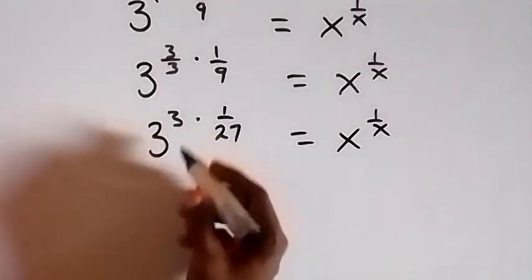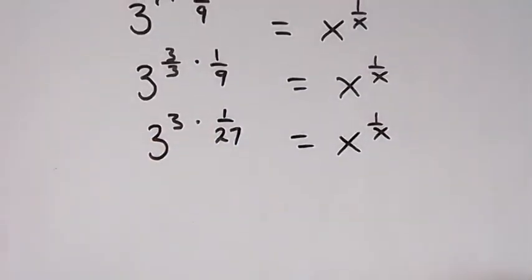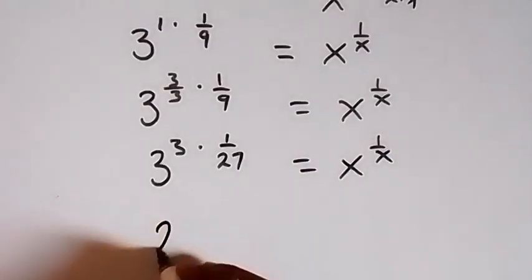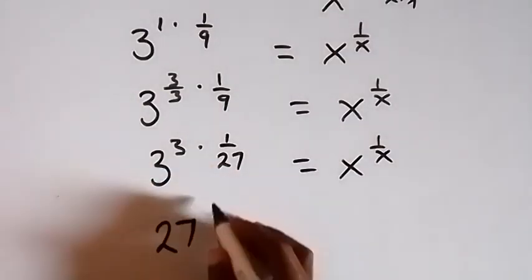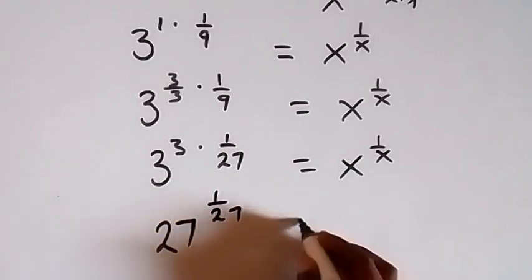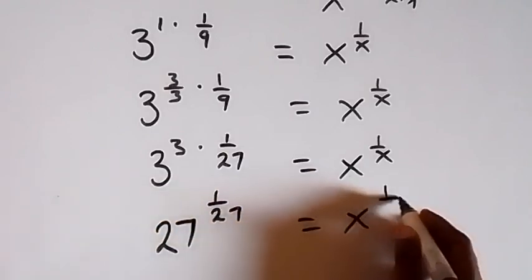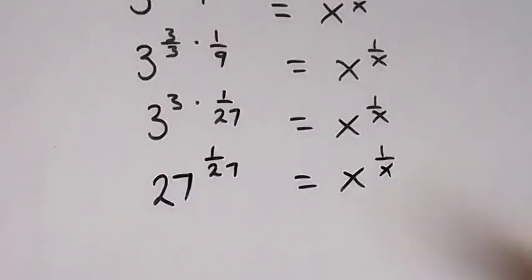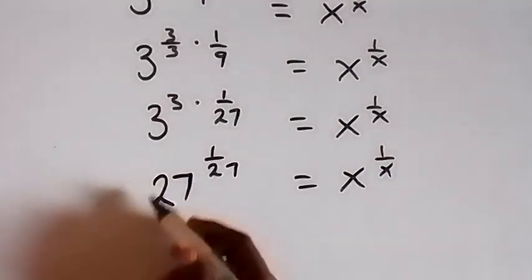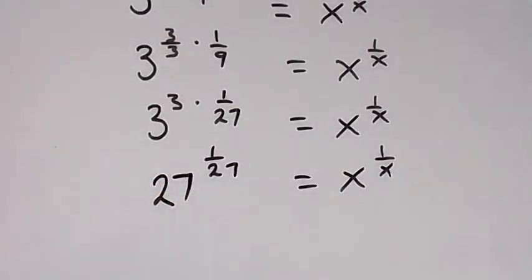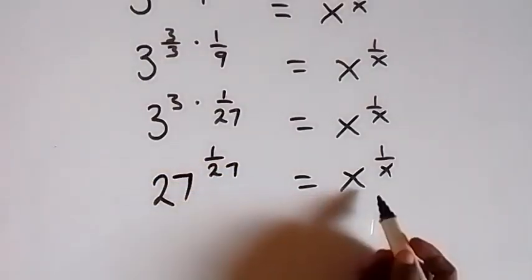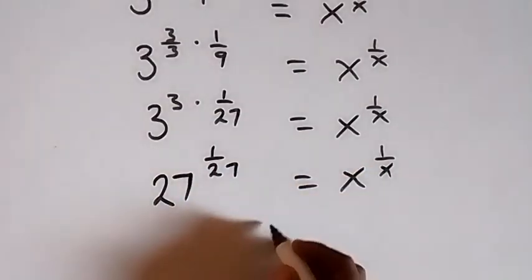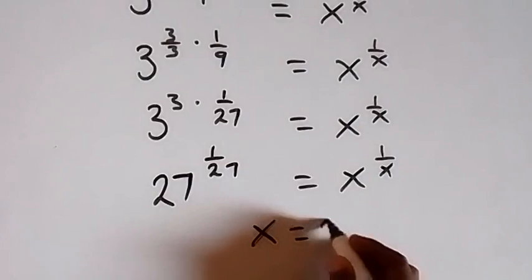Then 3 raised to power 3, which is 3 multiplied by itself 3 times, equals 27. So we have 27 raised to power 1 over 27, and equals to x raised to power 1 over x. When we compare the left hand side to the right hand side, we have 27 raised to power 1 over 27 and x raised to power 1 over x — the same form. So we can conclude that x equals 27.